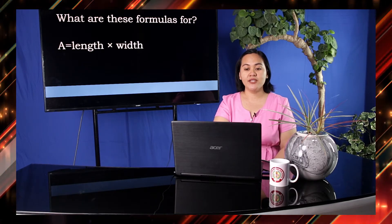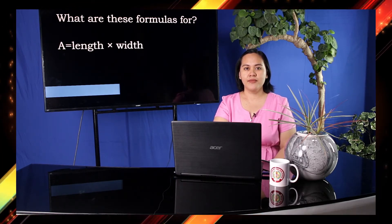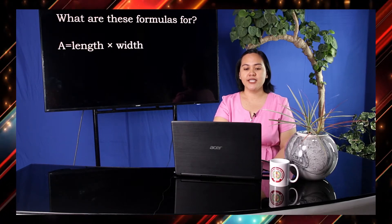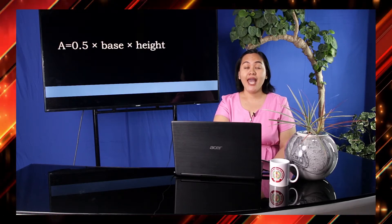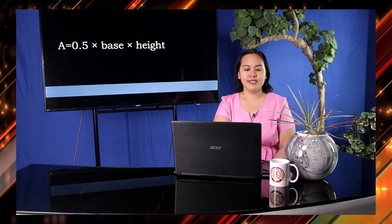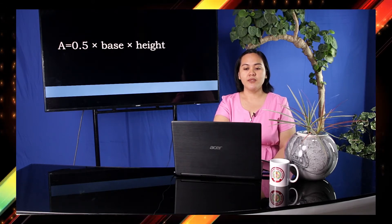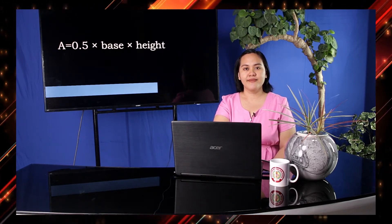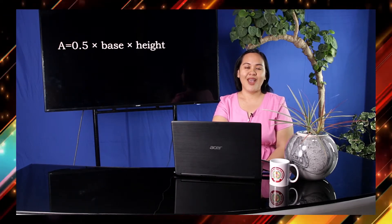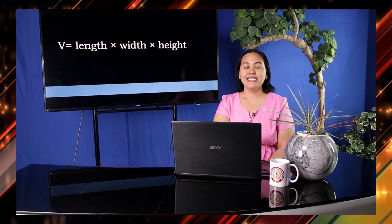You have 5 seconds to identify what this formula is for. Okay, your 5 seconds is up. Now, let's proceed to the next formula. We have A is equal to 0.5 times base times height. Okay, your 5 seconds is up. And lastly, we have V is equal to length times width times height.